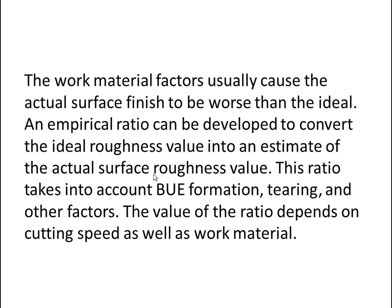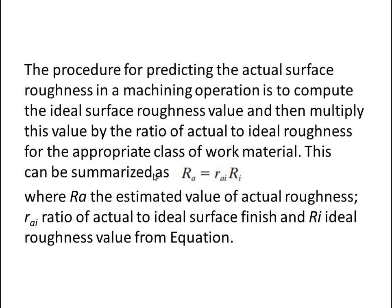The work material factors usually cause the actual surface finish to be worse than the ideal. An empirical ratio can be developed to convert the ideal roughness value into an estimate of the actual surface roughness value. This ratio takes into account build-up edge formation, tearing, and other factors, and its value depends on cutting speed as well as work material. The procedure is to compute the ideal surface roughness Ri, and then multiply by the ratio of actual to ideal roughness for the appropriate class of work material: Ra = ratio × Ri, where Ra is the estimated actual roughness.